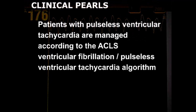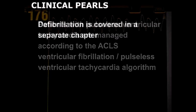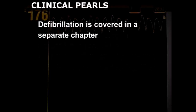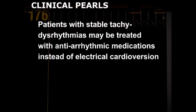Patients with pulseless ventricular tachycardia are managed according to the ACLS ventricular fibrillation pulseless ventricular tachycardia algorithm and should be defibrillated instead of cardioverted. Defibrillation is covered in a separate chapter. In many situations, patients with stable tachydysrhythmias may be treated with antiarrhythmic medications instead of electrical cardioversion. The use of these medications is beyond the scope of this video.